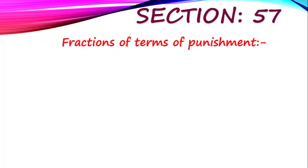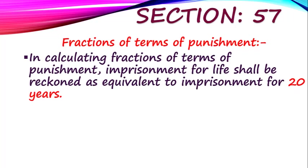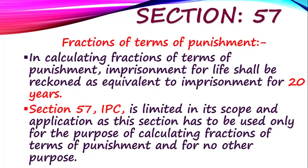Section 57 deals with the fraction of terms of punishment. There is often confusion between Sections 55 and 57. Section 57 says that in calculating fractions of terms of punishment, imprisonment for life shall be reckoned as equivalent to imprisonment for 20 years. This means that for administrative purposes — such as calculating fractions — life imprisonment is treated as 20 years. Section 57 is limited in its scope and application; it is to be used only for the purpose of calculating fractions of terms of punishment and for no other purpose.